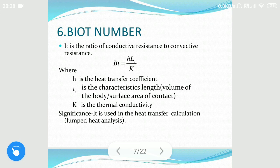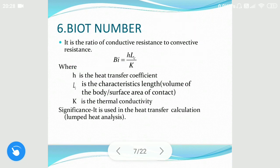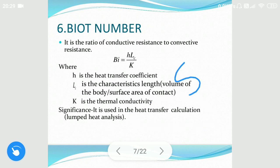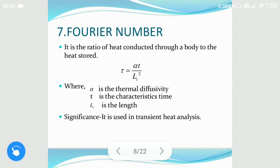Number six is the Biot number. Biot number is a ratio of conductive resistance to convective resistance. It is given by H·Lc divided by k, where H is the heat transfer coefficient, Lc is the characteristic length (which can be found by volume divided by area), and k is the thermal conductivity of the material. Note that Biot number is useful for heat transfer calculations of solids, while the Nusselt number is for fluids.